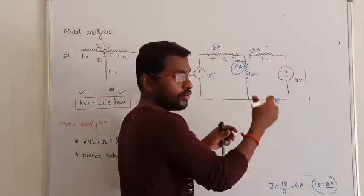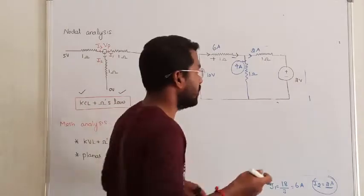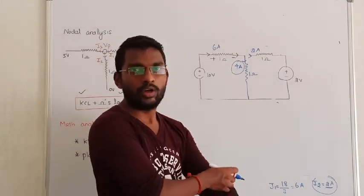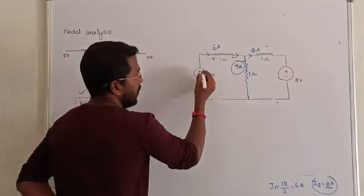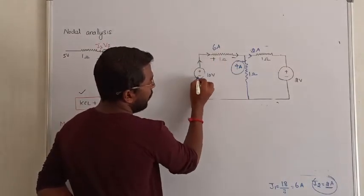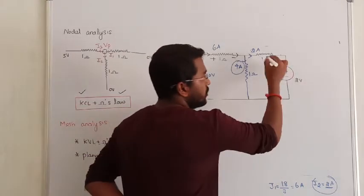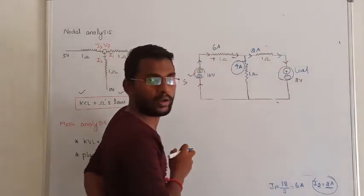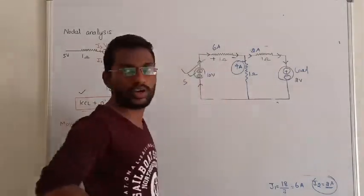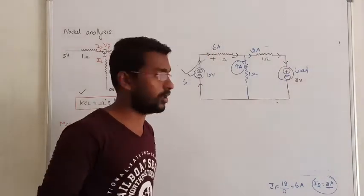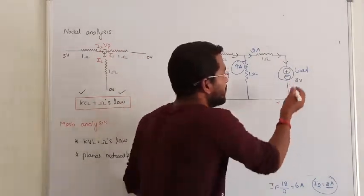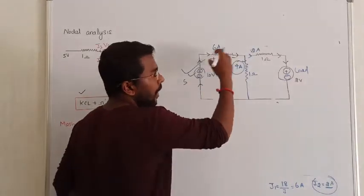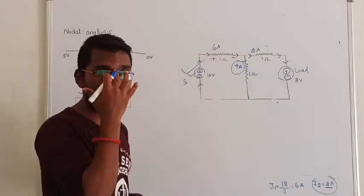If you want to analyze the circuit further — for example, to find power delivery and power absorption — you can do so now that we know all the currents. Power delivery and power absorption depend on the direction of current. If current enters the minus terminal, that element is a source delivering power. If current enters the plus terminal, that element is a load absorbing power. We have one source in the circuit supplying power, and the resistors are absorbing power.